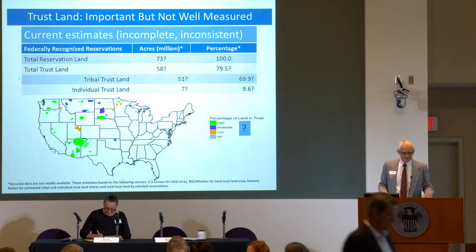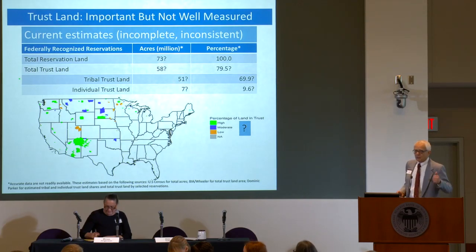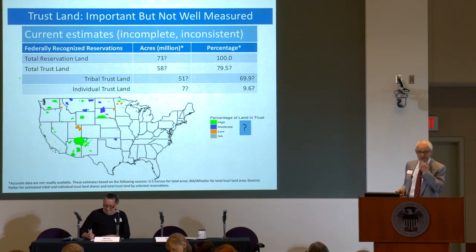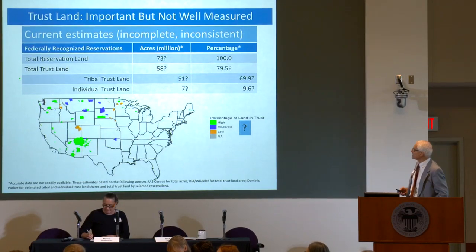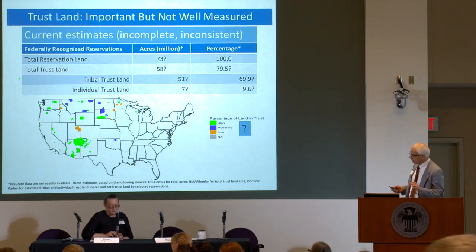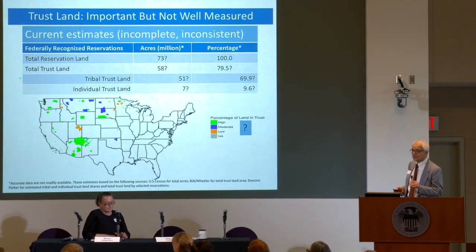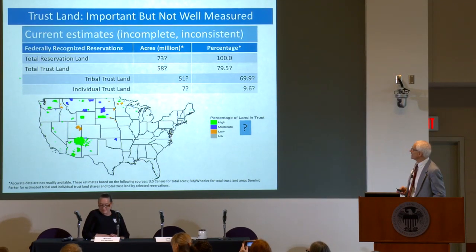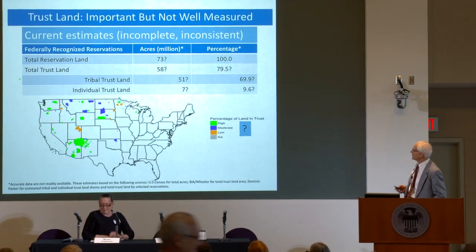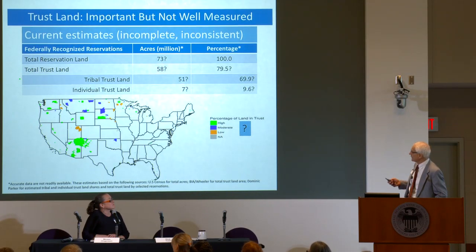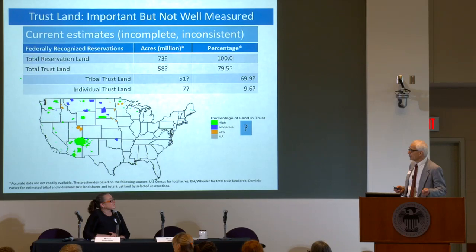Trust land is on the one hand very important to Indian country, but on the other hand we don't measure it all that well. Various census sources give around 70 to 75 million total acres on federally recognized reservations. The American Community Survey says 73 million, but that's a hard number to pin down. When you try to get official figures on trust land — either total, tribal, or individual — we don't have a really clear authoritative source.